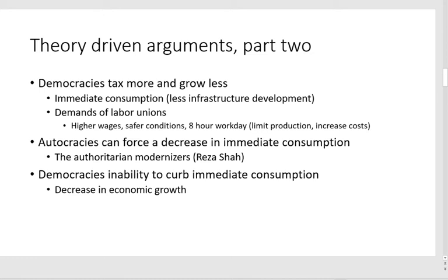One of them is Reza Shah. Reza Shah is the leader of Iran from around the 1920s, growing into the mid-20th century. Eventually he's removed from power — there's this whole history where Reza Shah leaves, then the United States reinstates the Shah, and this leads to the popular Iranian revolution in 1979, where the Ayatollah comes in and the theocratic religious government takes over.